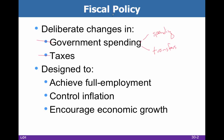Why does the government execute fiscal policy? The answer is basically related to the Employment Act of 1946. In order to control the economy, you have to have some tools — some levers that you can pull to make things happen. What they're trying to do is get full employment, stable prices, and economic growth, which comes from full production.